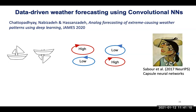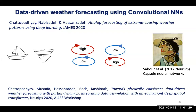This was shown nicely in a Sabour et al. 2017 NeurIPS paper, where they showed that capsule-based architectures have the ability to do what convolutions cannot. The go-to architecture for this property should be capsules, which have the property called equivariance-preserving. That's what I'll talk about in the next few minutes.